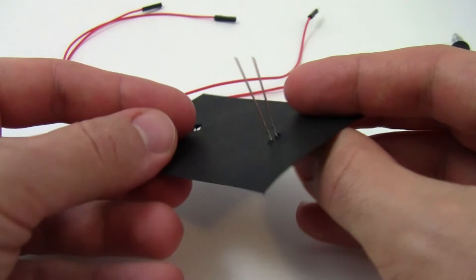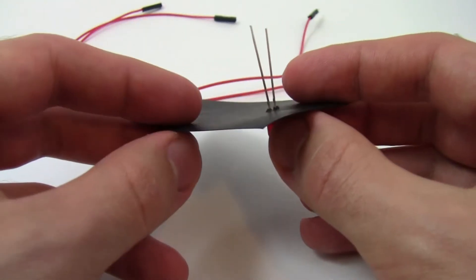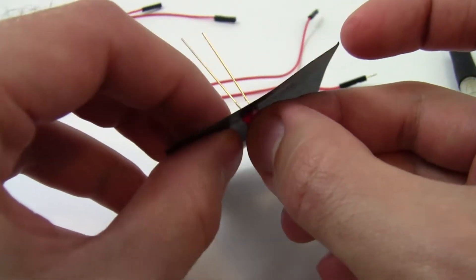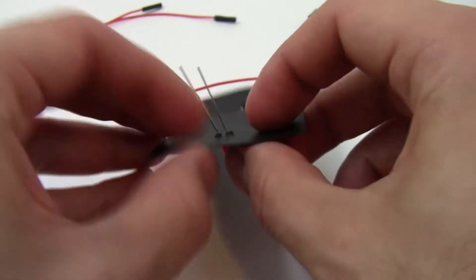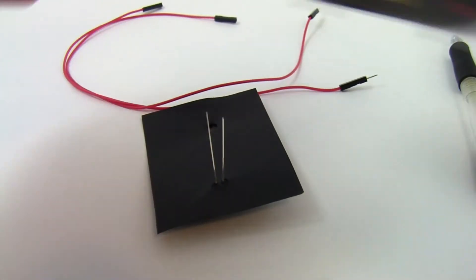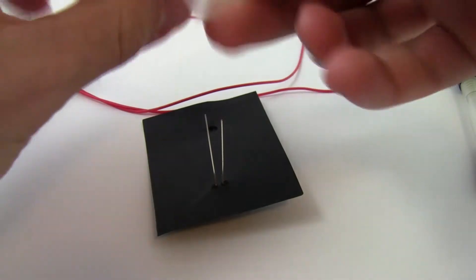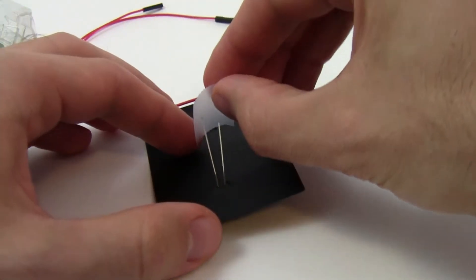Now with either approach you are probably going to want to secure the LED down a little better so this might come out or wiggle a little bit. I'm just going to take a couple pieces of tape and put them on the back to help hold the leads in place.